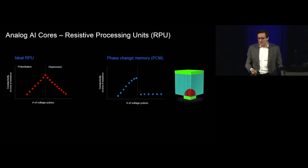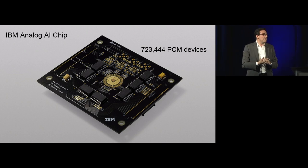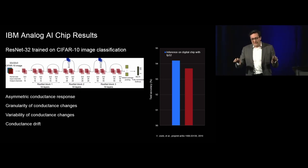What could you do with the memory devices we have? We've been working on this for a number of years. We have built an analog AI chip that has over 700,000 phase change memory devices to implement some of these core neural network architectures. Here is an example of AI chip's results where I implemented a ResNet-32 neural network using the CIFAR-10 image classification data set. In blue, you're seeing the inference performance in terms of test accuracy using a digital implementation with 32 floating point operation. In red, you're seeing the results of the analog chip within 0.5% of the test accuracy.